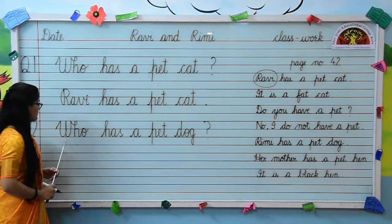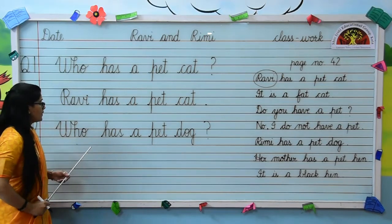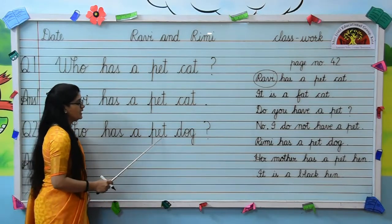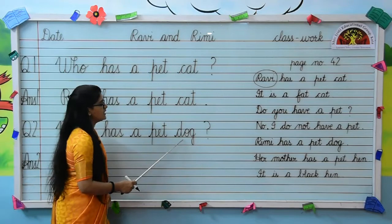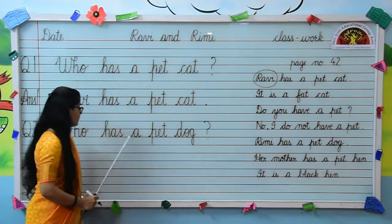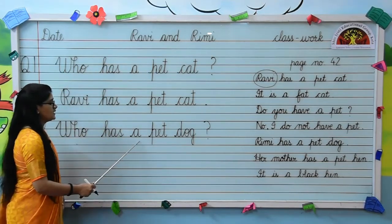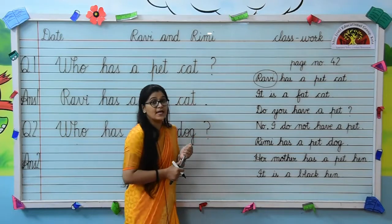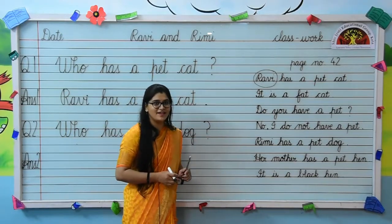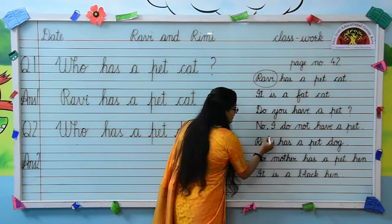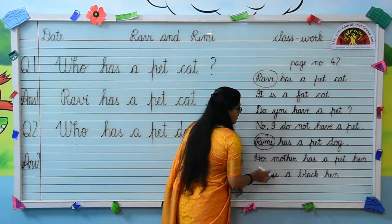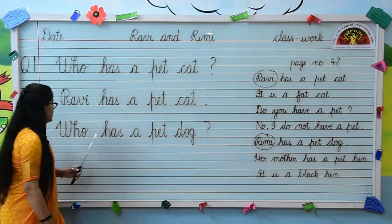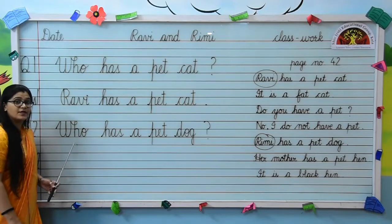We will move to the next question. Read question number 2. W-H-O, who; H-A-S, has; a P-E-T, pet; D-O-G, dog. Who has a pet dog? Kids, do you remember who has a pet dog? What is the name of that girl? Yes, Remy. Remy has a pet dog. So on the place of who, we will write Remy.